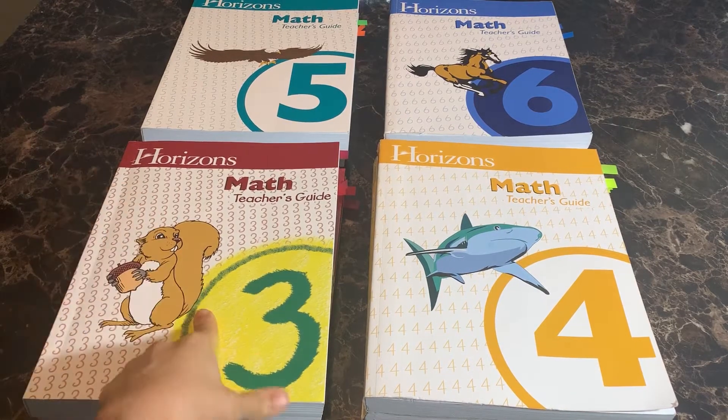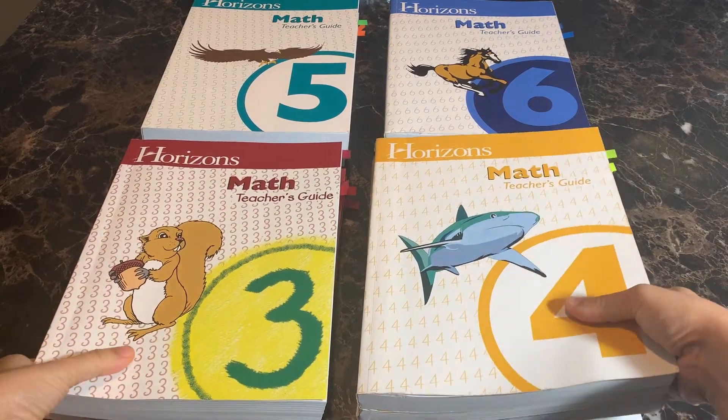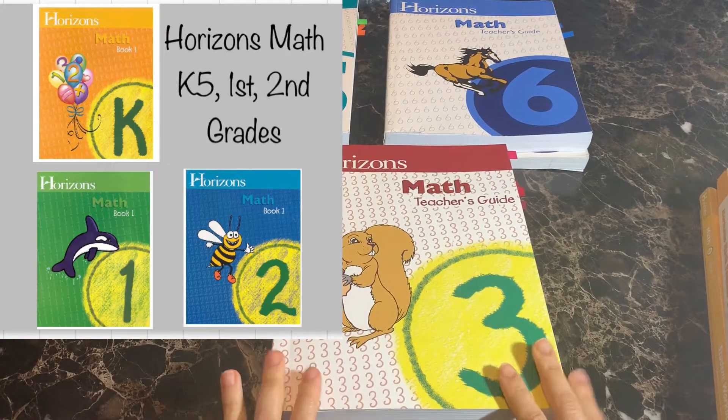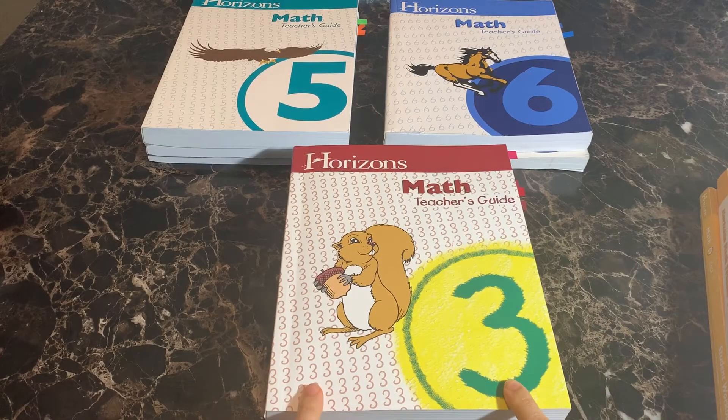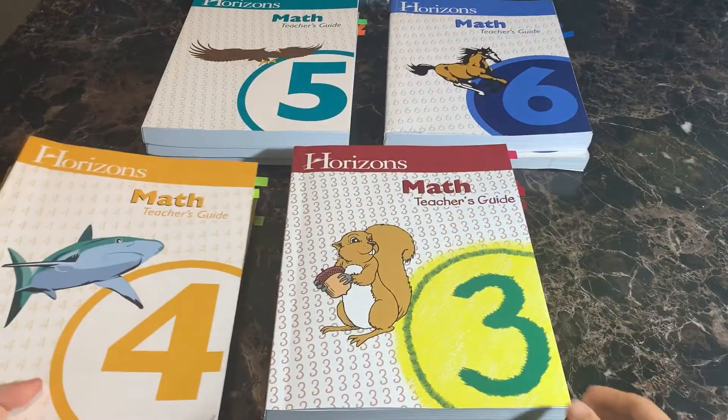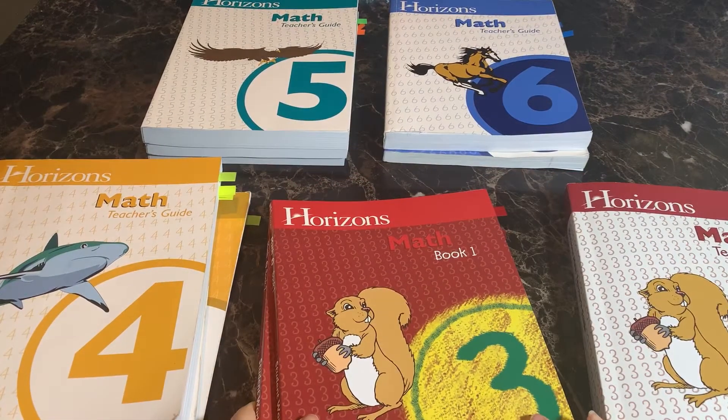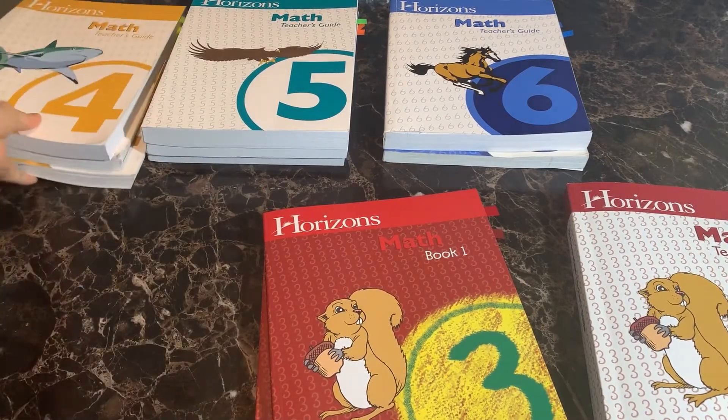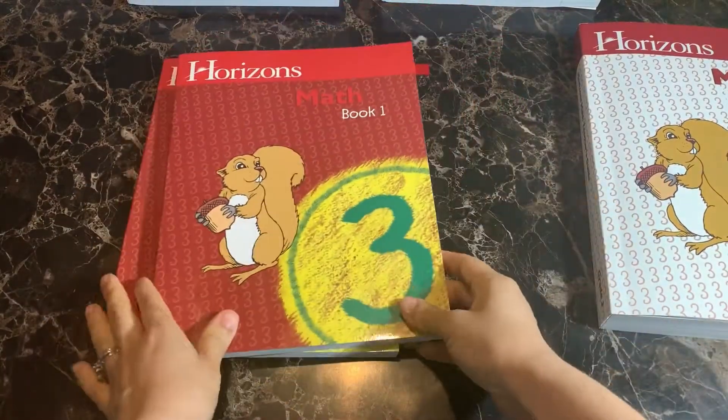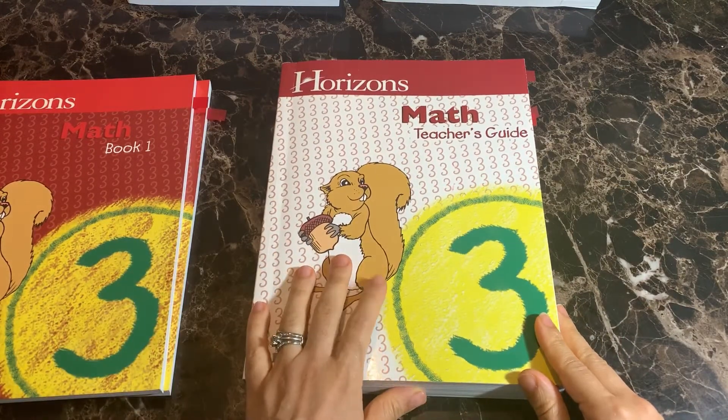So what I'm going to do is I'm going to show you a look inside the third grade to kind of just show you how this is laid out. Because what I noticed is the younger grades, so third grade, and I believe also first and second grade, are laid out a little bit differently than the older grades. So I'm going to show you how this is laid out and then I'll talk about the differences in the older grades so that you have a sense for that as well. Okay, so here I have the teacher's guide and then Horizons comes with a book one and book two.